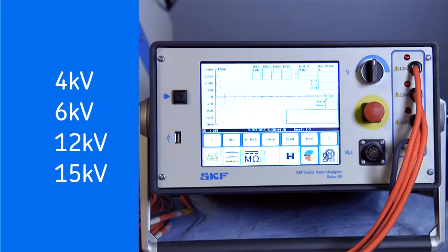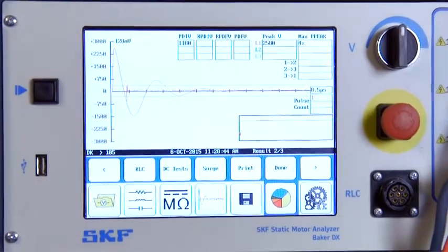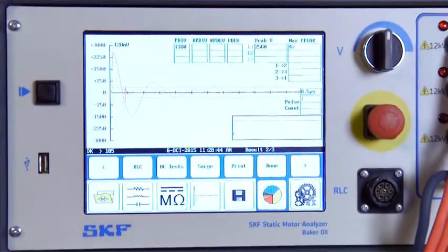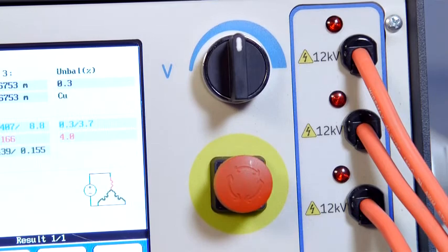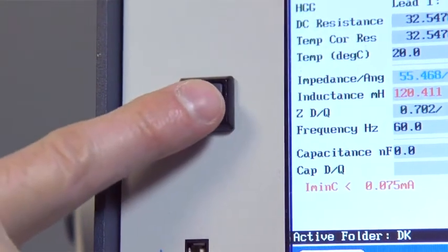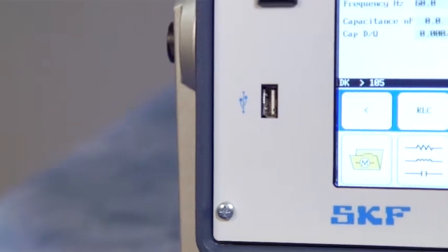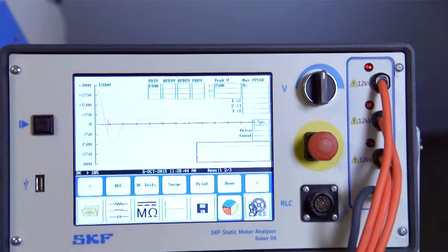The DX family has models with maximum test voltages of 4kV, 6kV, 12kV, and 15kV. High output models are available for both the 6kV and 12kV models. The DX uses a color touchscreen interface usable in direct sunlight and with gloves on.